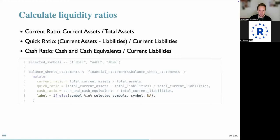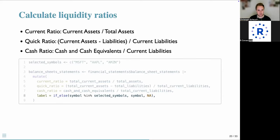We also create a label variable as a helper for plotting, using the symbol for selected stocks and a missing value for all others, to facilitate highlighting the three stocks we want to highlight.